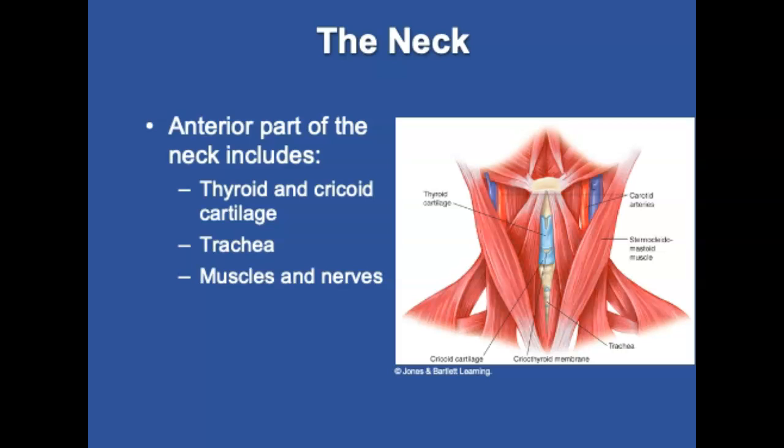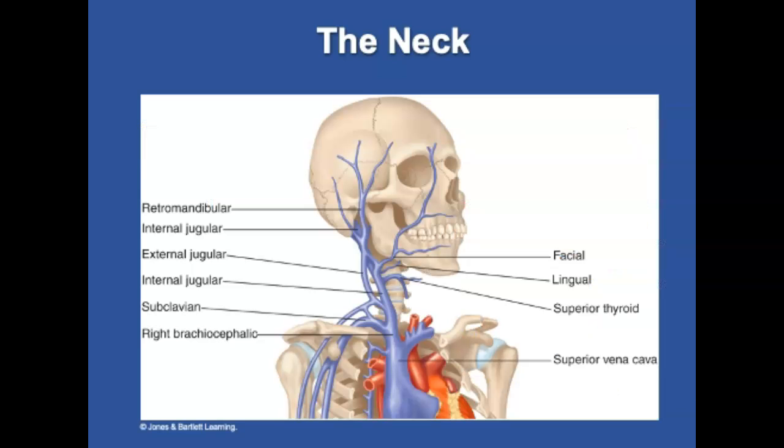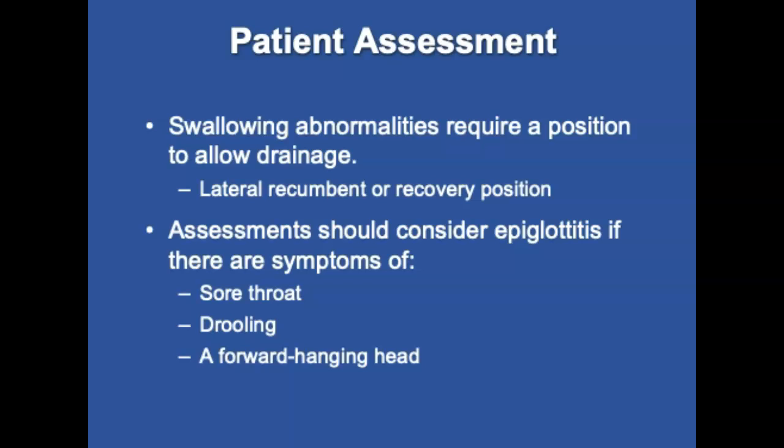The neck consists of anterior and posterior portions. The anterior neck includes the thyroid and cricoid cartilage, the trachea, and numerous muscles and nerves, as well as major blood vessels including the internal and external carotid arteries and the internal and external jugular veins. Vertebral arteries run laterally to the cervical vertebrae in the posterior neck. Patients with swallowing abnormalities or copious mucus production should be placed in a position that allows drainage. Assessing stroke patients must include early recognition of airway threats. For patients who cannot protect their airways and are at risk for aspiration, intubation should be considered. Consider epiglottitis if symptoms include sore throat, drooling, or a forward-hanging head.